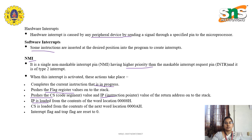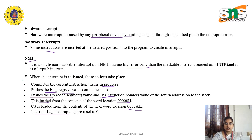Next, IP is loaded from the contents of the word location at address 000000H. Then the interrupt flag and the trap flag are cleared. So these are the steps that are followed whenever the non-maskable interrupt is activated.